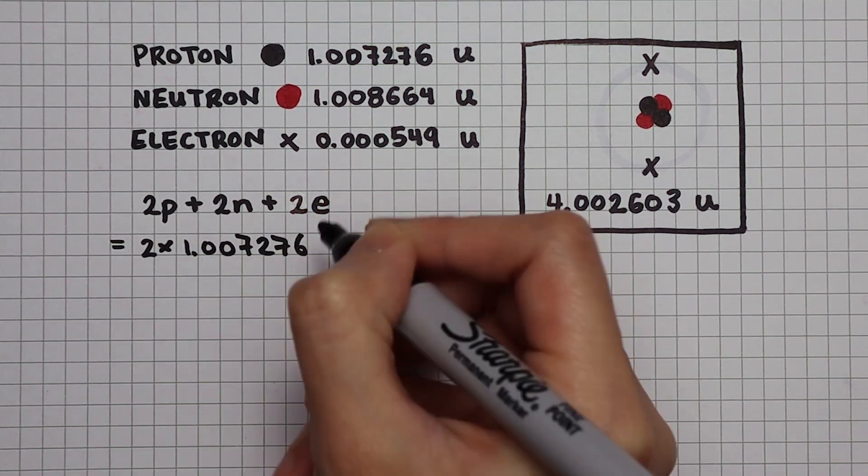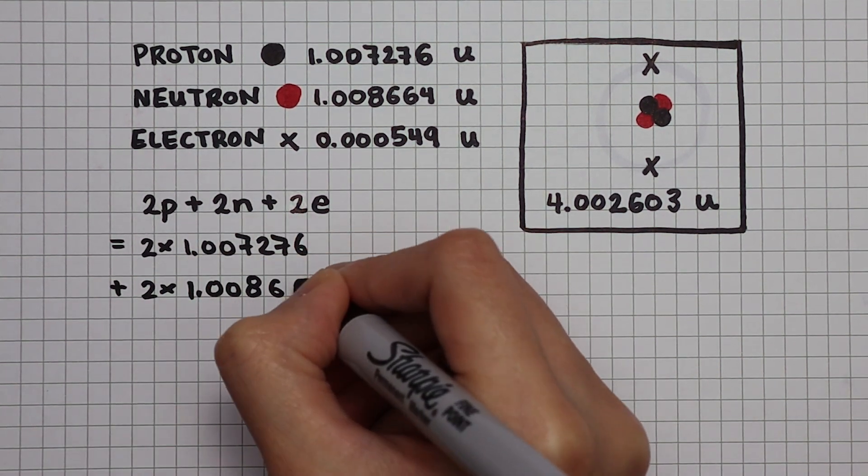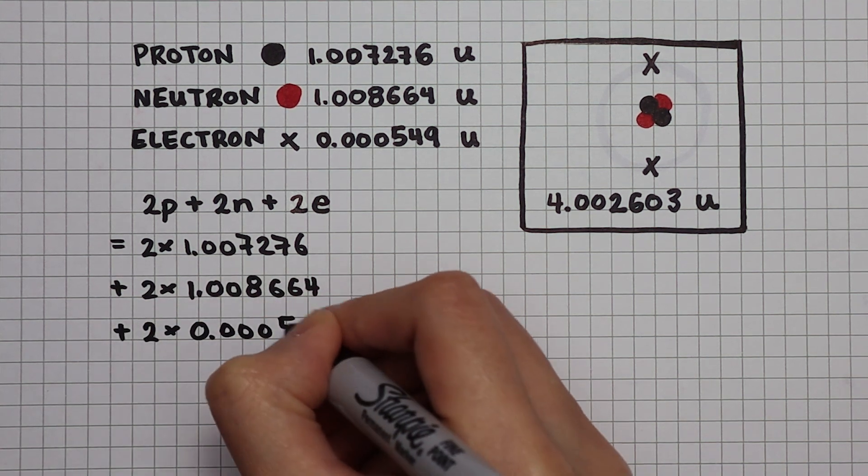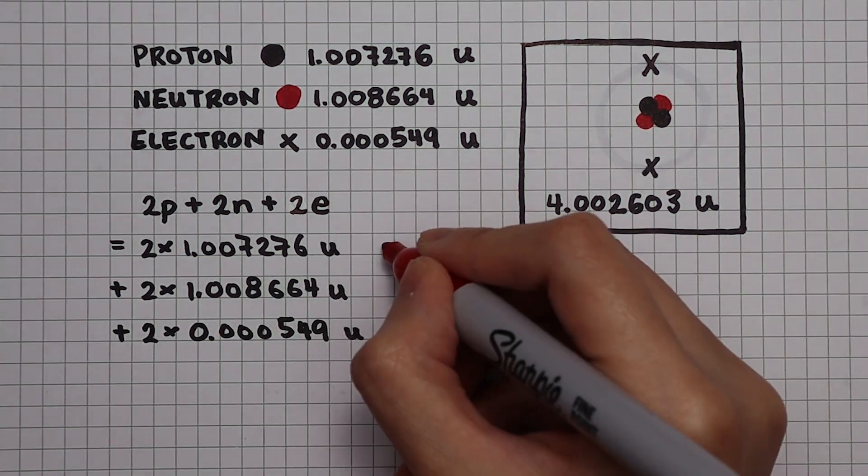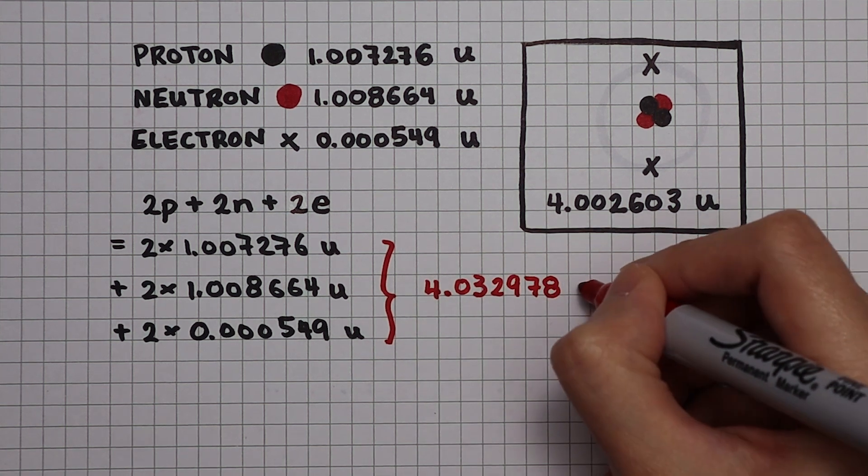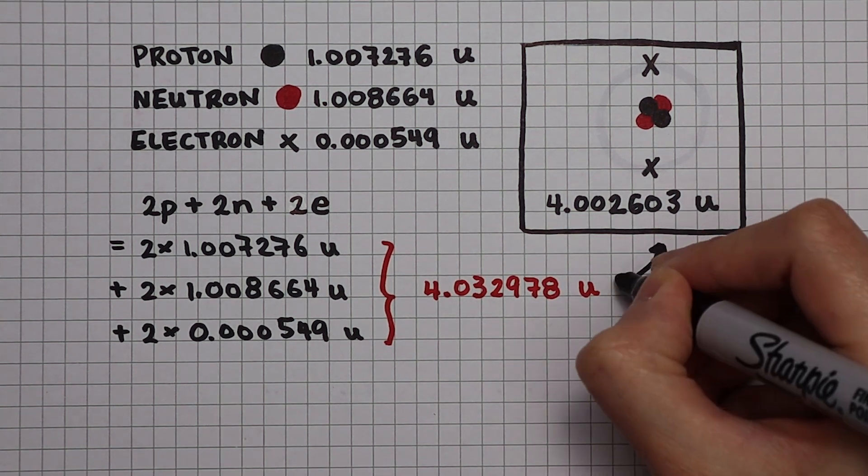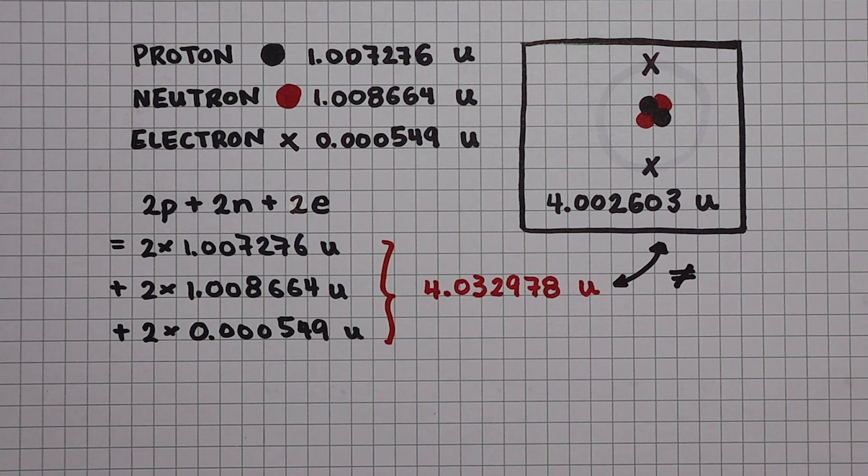We'll substitute the masses in. We get a mass of 4.032978u. Not quite the same as the mass of a whole helium atom.